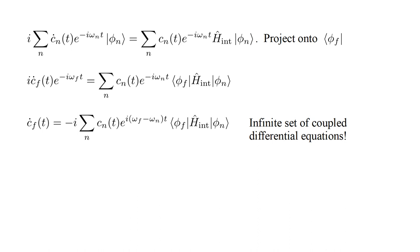C f dot of t equals minus i, sum over n, c n of t, e to the i omega f minus omega n, t, times the f n matrix element of the interaction Hamiltonian. This problem is too difficult to solve exactly, which motivates us to apply perturbation theory to develop approximate solutions.